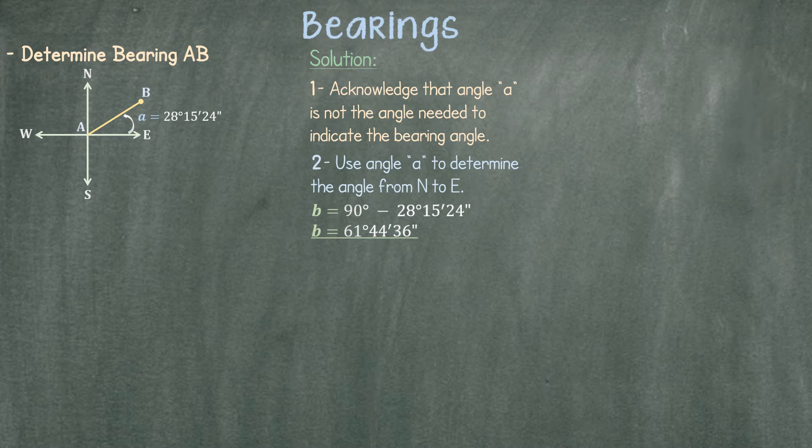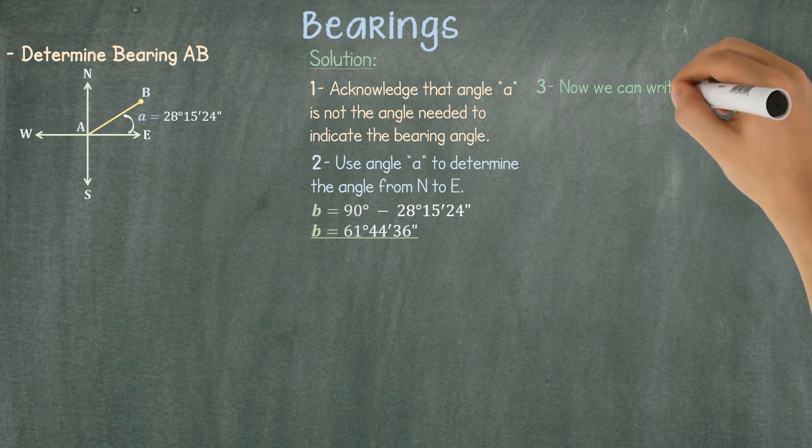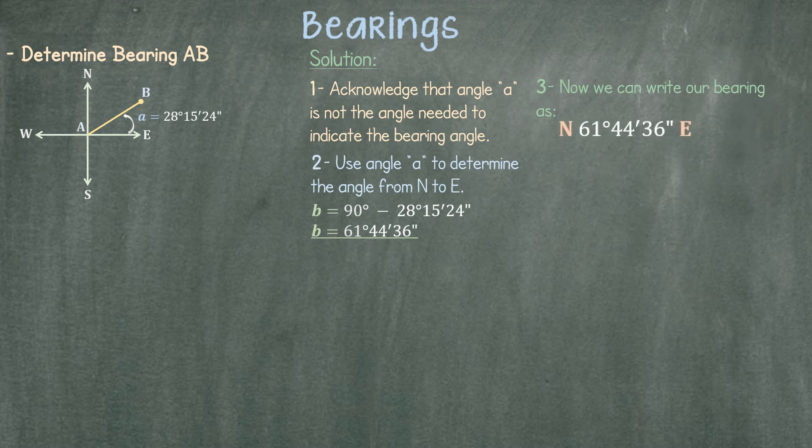Our angle B is 61 degrees 44 minutes 36 seconds. Now we can write our bearing as north 61 degrees 44 minutes 36 seconds east.